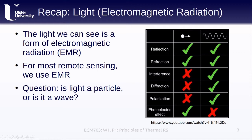Both models can explain reflection and refraction, but only the wave model can explain the properties of interference, diffraction, and polarization. But the wave model can't explain the photoelectric effect — see the additional resources at the end of this lesson — whereas the particle model can. So the answer to the question, is light a particle or is it a wave, is: it depends. The reason why is well outside of the scope of this course, but if you're interested, there are more links at the end of the presentation that go a bit deeper into the topic.